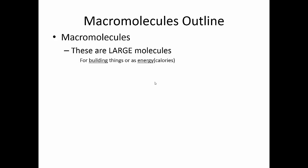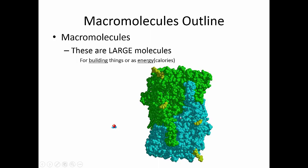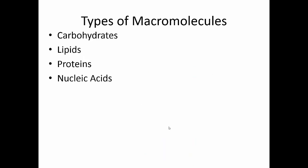A macromolecule is just any molecule that is really big, and there's no firm dividing line between a small molecule, such as this water molecule here, or this great big protein. Molecules can be very small or very large, and macromolecules tend to be very large. We're going to talk about carbohydrates, lipids, proteins, and nucleic acids in that order.